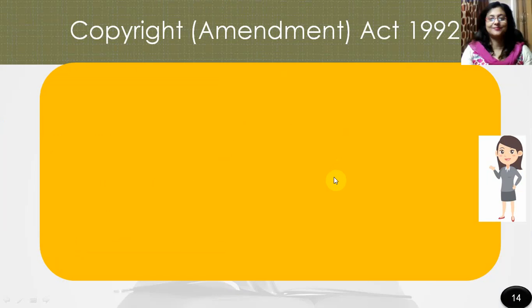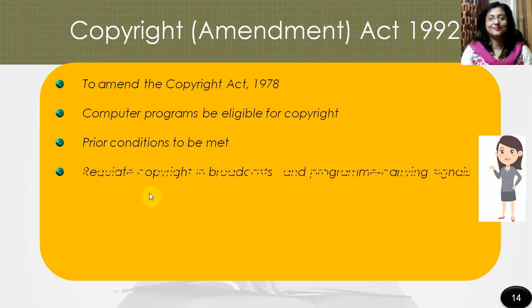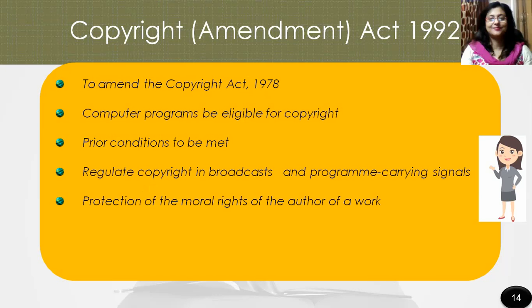The Copyright Amendment Act 1992 was used to amend the Copyright Act 1978 so as to amend, delete, or insert certain definitions, to make provision that computer programs be eligible for copyright as a separate category of work, to further provide for the conditions to be met before works become eligible for copyright, to further provide for copyright in broadcast and program-carrying signals, and to further provide for the protection of the moral rights of the author of a work.